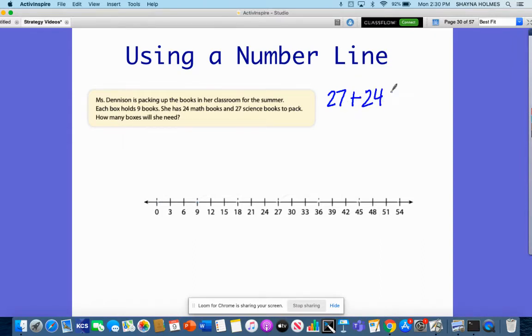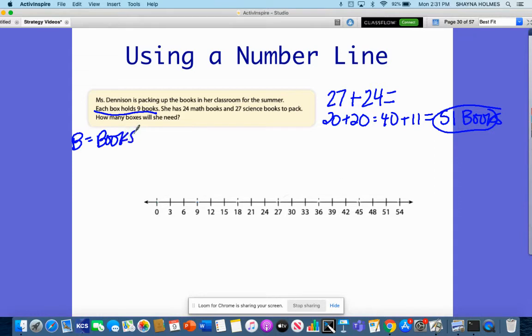When I do 27 plus 24, I could easily just say 20 plus 20 equals 40, and then 4 plus 7 is 11, so that's 51 books that need to be packed. It says each box holds 9 books. So this equation right here, I am going to say b is going to equal books. So 27 plus 24 equals b, and we know that b equals 51. This is just some information we're going to keep over to the side.